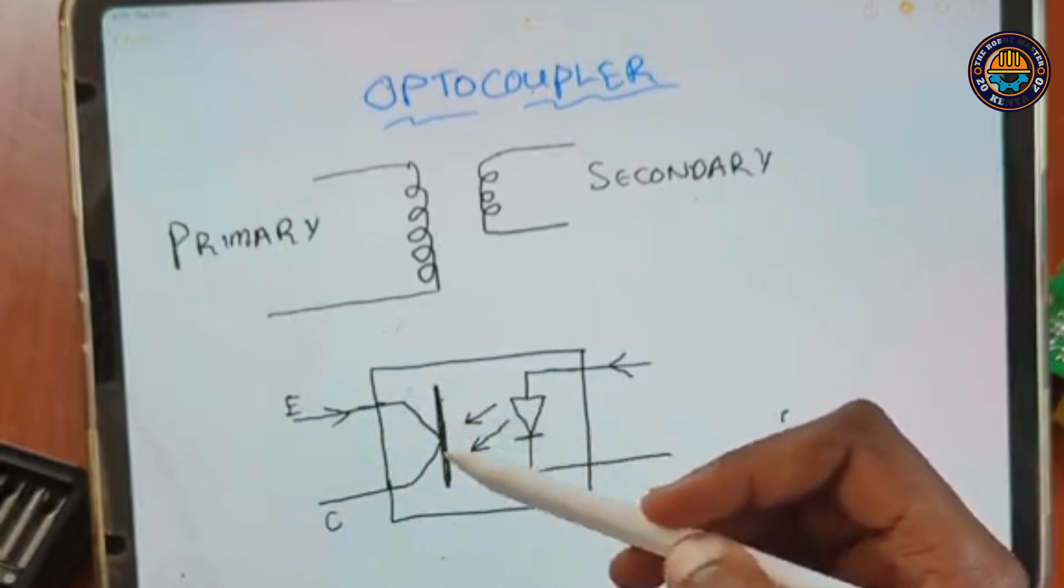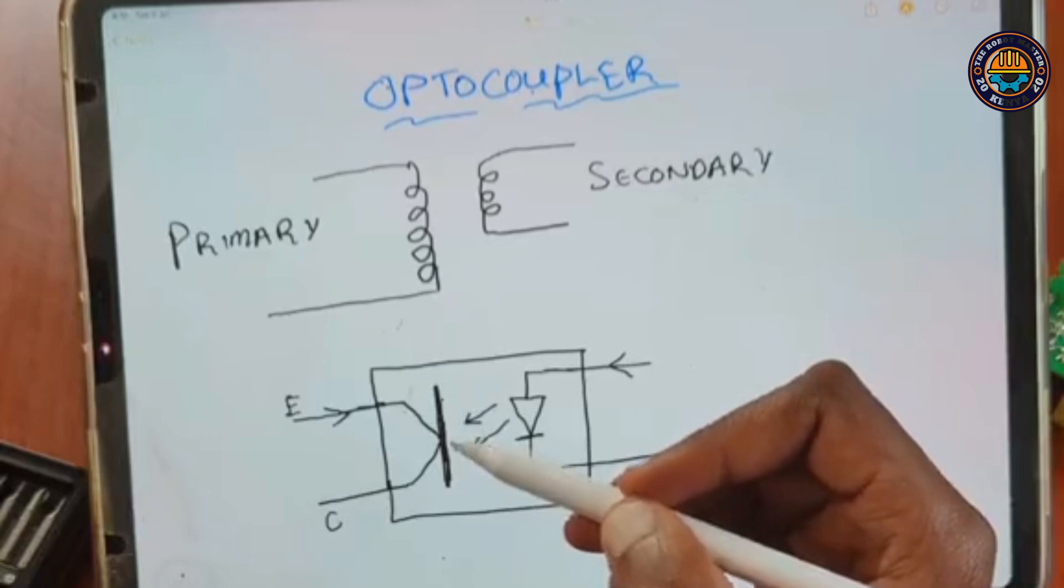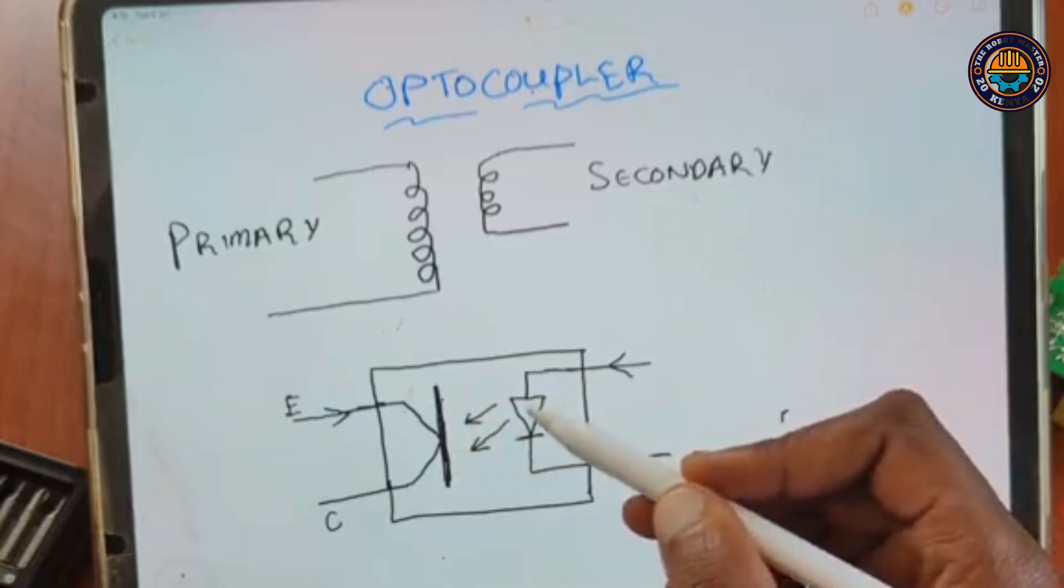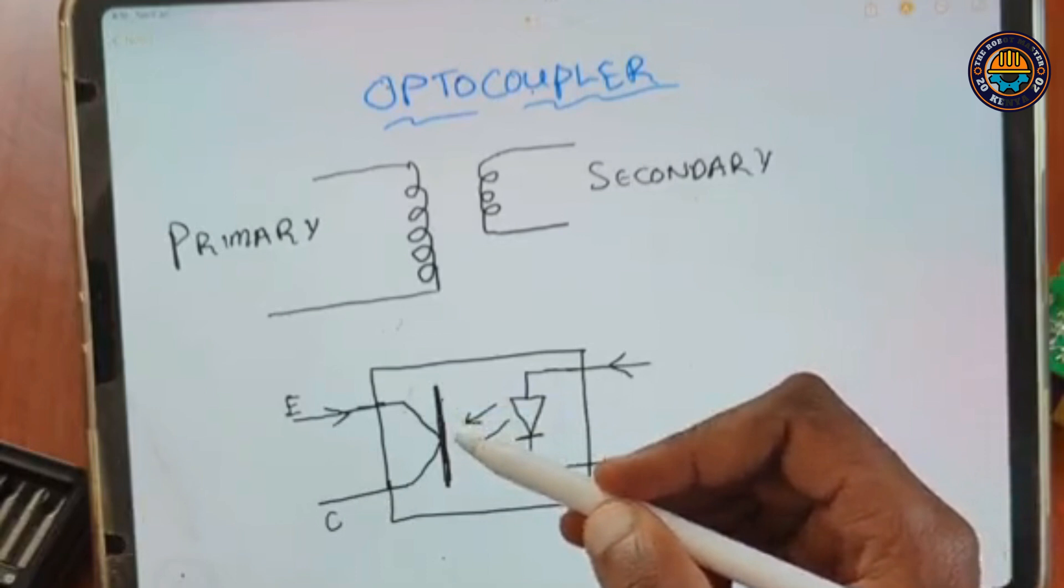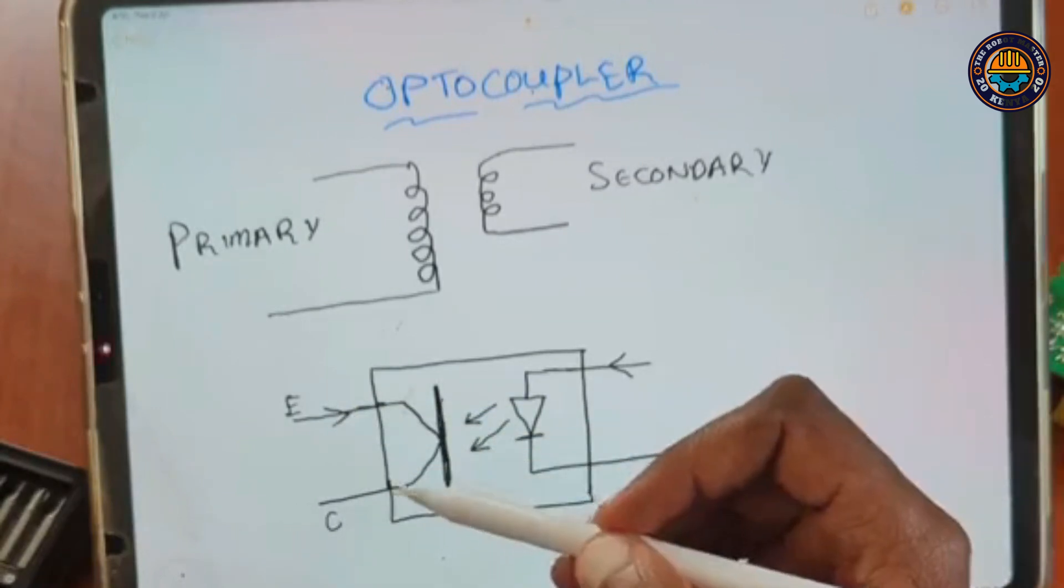But instead of having a base, we have a phototransistor, and this phototransistor is sensitive to light. So when this LED lights up, the phototransistor closes the switch between the emitter and collector.